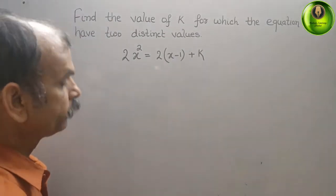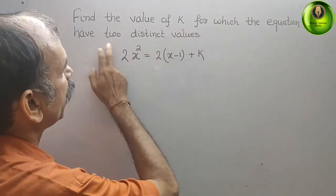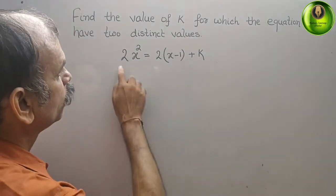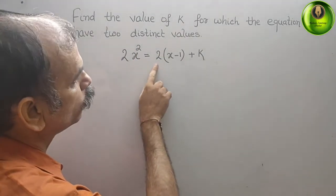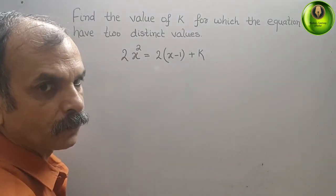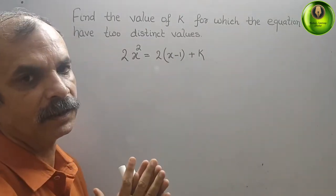Your question is: find the value of k for which the equation have two distinct values. What they have given: 2x² = 2(x-1) + k. Now just bring everything to your left side.